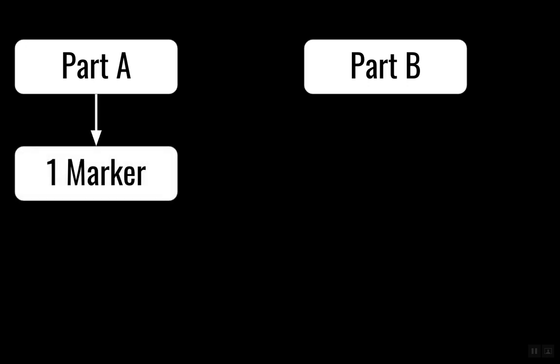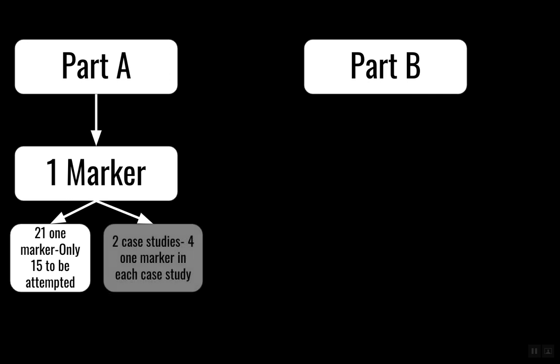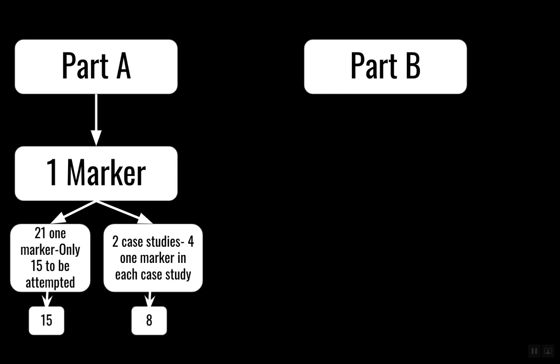Basically they have divided the paper into two parts, Part A and Part B. Part A is just talking about one-marker questions where there are a lot of choices given to you. 21 questions will be there from all three areas — networking, database, and Python. Apart from those 21 one-marker questions, they have also given two different case studies of total eight marks. So in total they have taken 23 marks for this particular section.